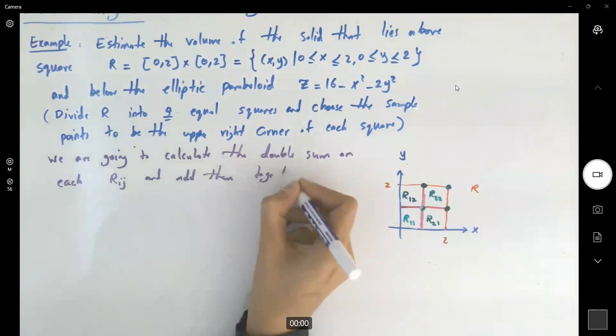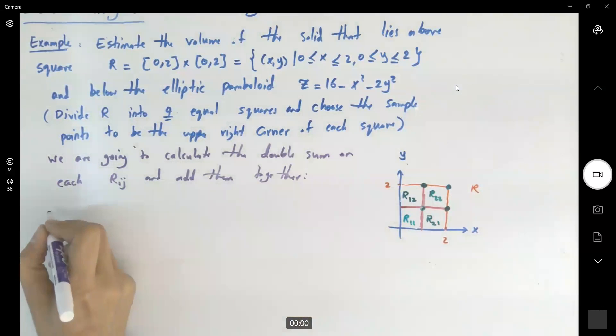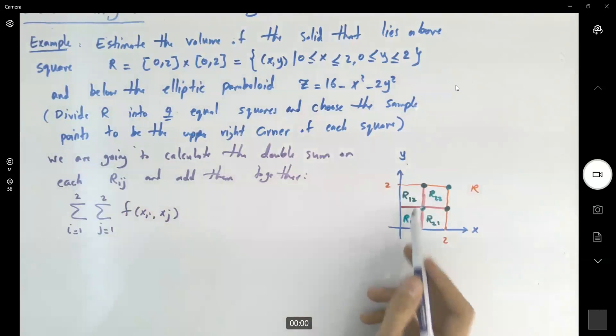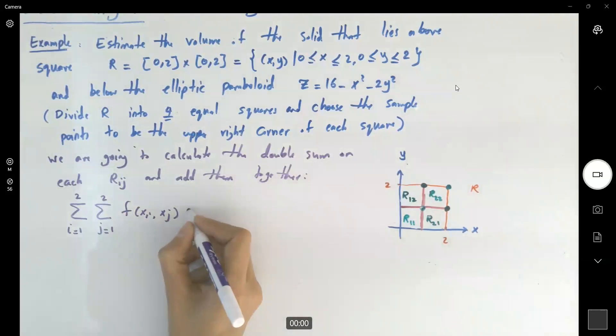We are going to calculate the double sum on each R sub ij and add them together. Or mathematically, you are doing this. You say that we have the double sum of our function, x_i x_j and my j starts from 1, goes to 2. And i starts from 1, goes to 2. And this guy, delta A, which is equal to.